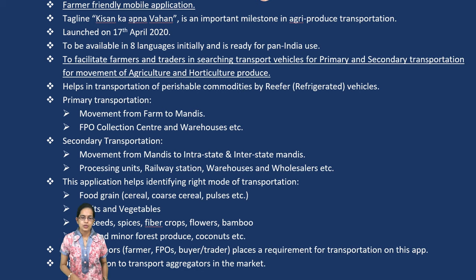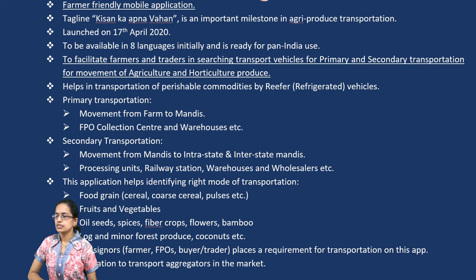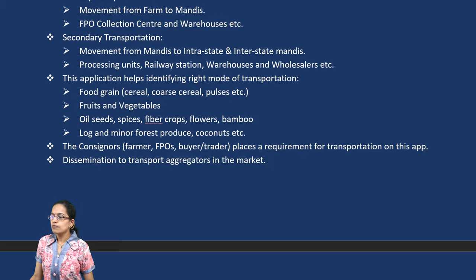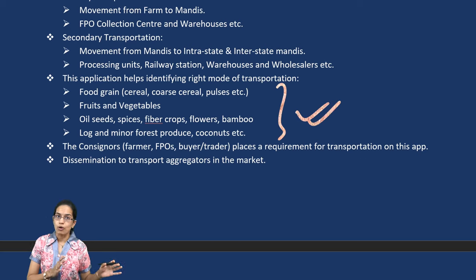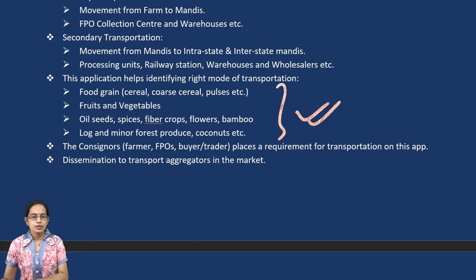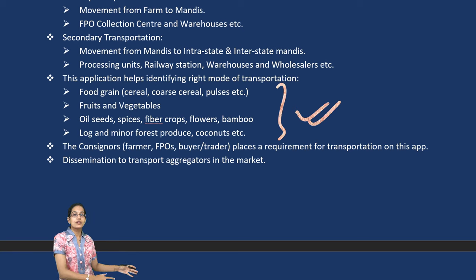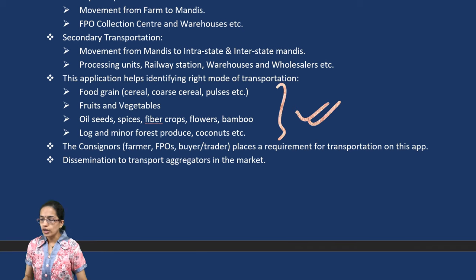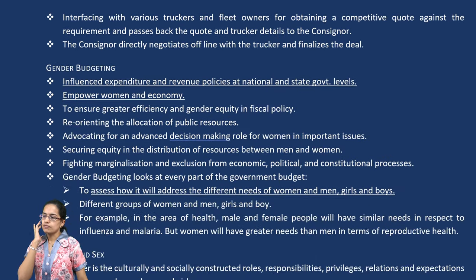The Kisan Rath app aims to show how warehouses would be procuring produce and how the application would create a transparent system. The mode of transport would differ for different crops — different for fruits, different for grains, different for oilseeds, and so on.